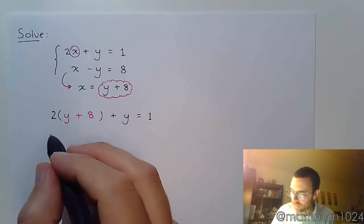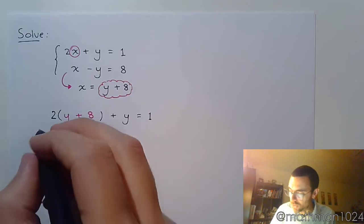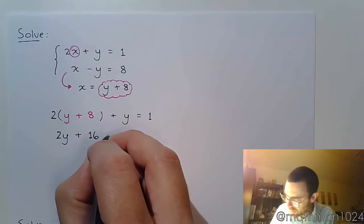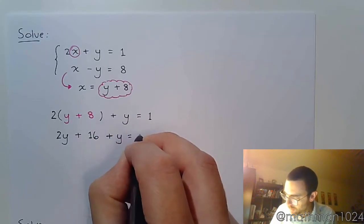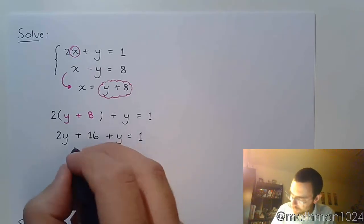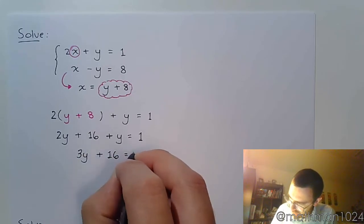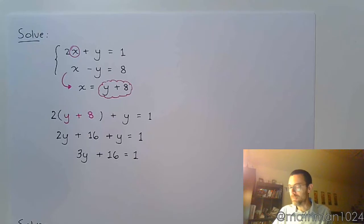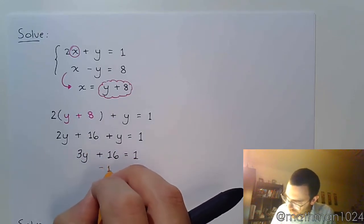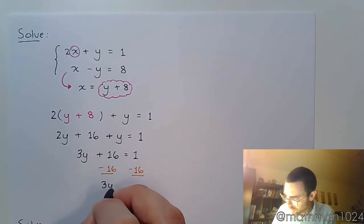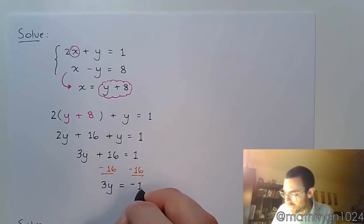Now you see the parentheses really weren't necessary here because I have this multiplication with 2. So we've got 2Y plus 16 plus Y equals 1. Let's clean this up a little bit. We've got 3Y plus 16 equals 1. This is a nice linear equation. We're going to subtract 16 on both sides. So 3Y is equal to negative 15. Divide both sides by 3 and you get that Y equals negative 5.